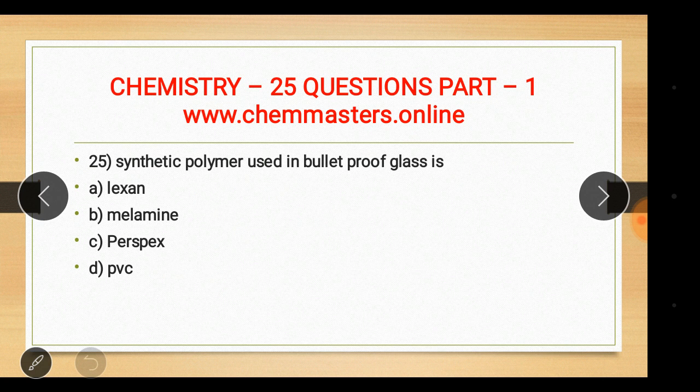Question twenty-five: the synthetic polymer used in bulletproof glass is Lexan — answer A. The other options were melamine, perspex, and PVC.